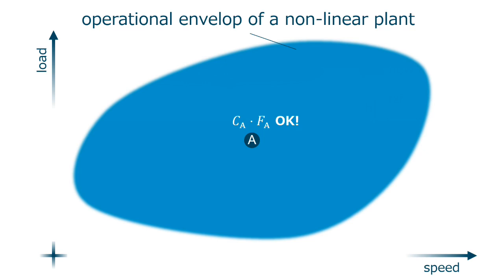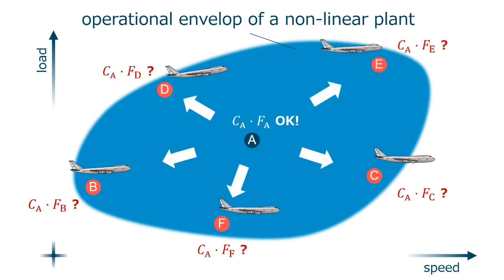But now the question arises. What will happen to the control system when the plant moves to other regions of the operational envelope always using the same controller CA?